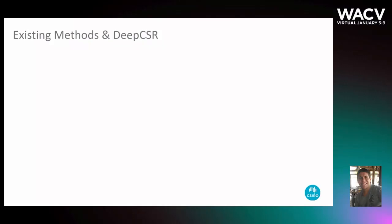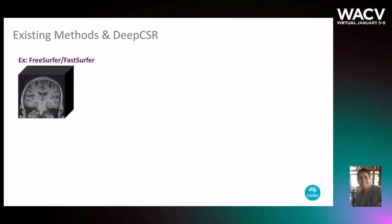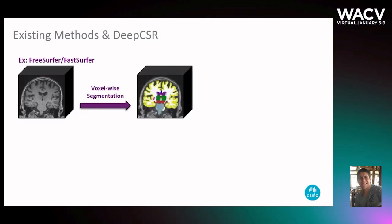Traditionally, this problem is tackled by lengthy pipelines of image processing techniques like the widely used FreeSurfer and its recent fast and deep learning powered version FastSurfer. These approaches first voxel-wise segment the input MRI and then fit surfaces within the voxels in the boundaries of the tissues.